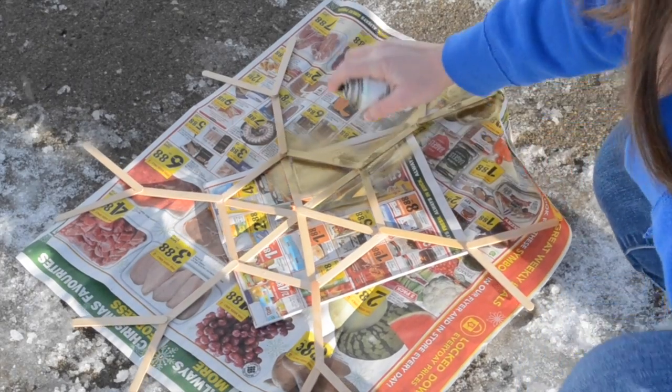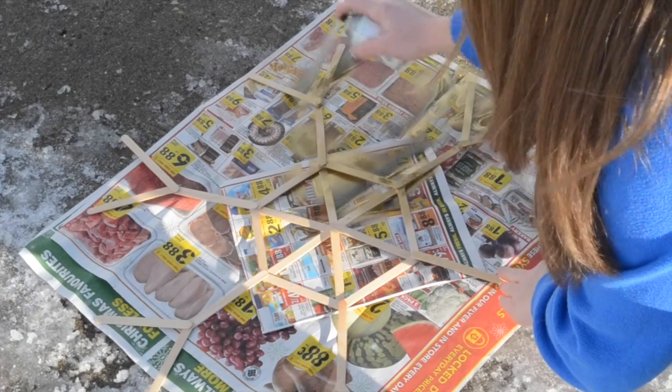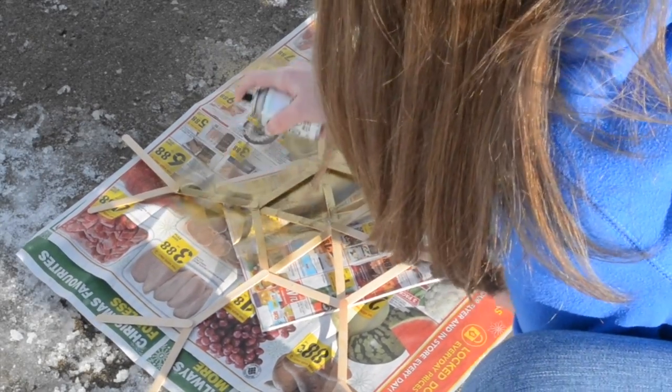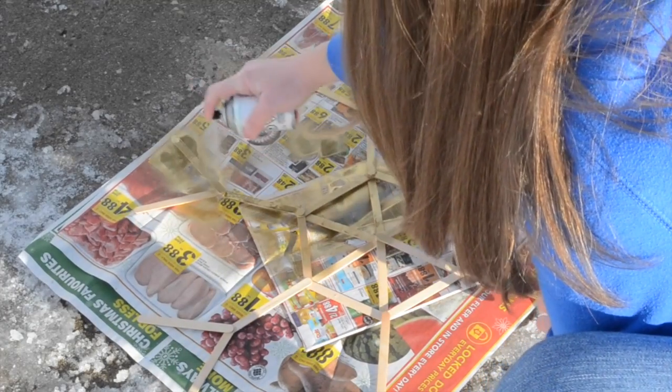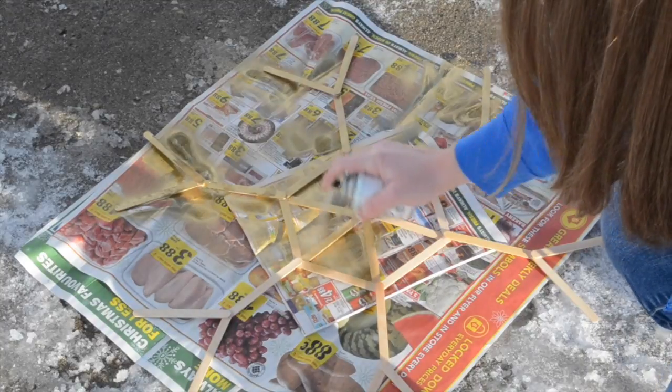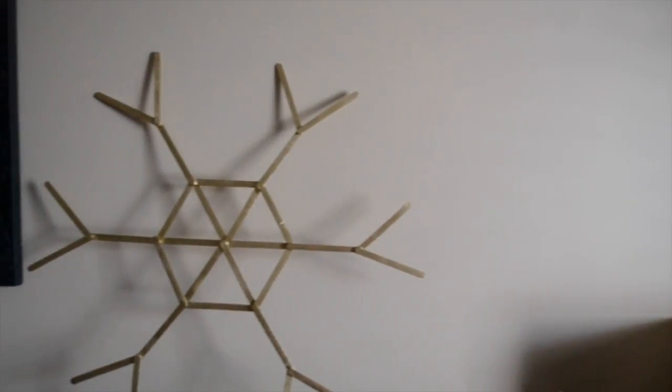Then going outside, you will place your snowflake on some old newspapers or flyers and start to spray paint it gold. And there you have your popsicle stick snowflake.